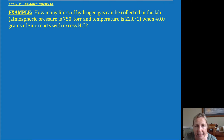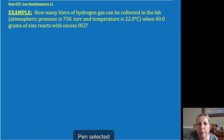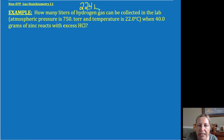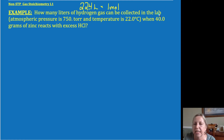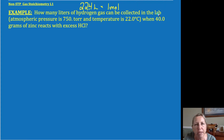We're going to apply the gas laws to stoichiometric calculations for different reactions. Some of you may have already applied molar volume — 22.4 liters equal to one mole. If you are an IB student, you would see that as 22.7 liters per one mole. You may have already applied that to stoichiometry.